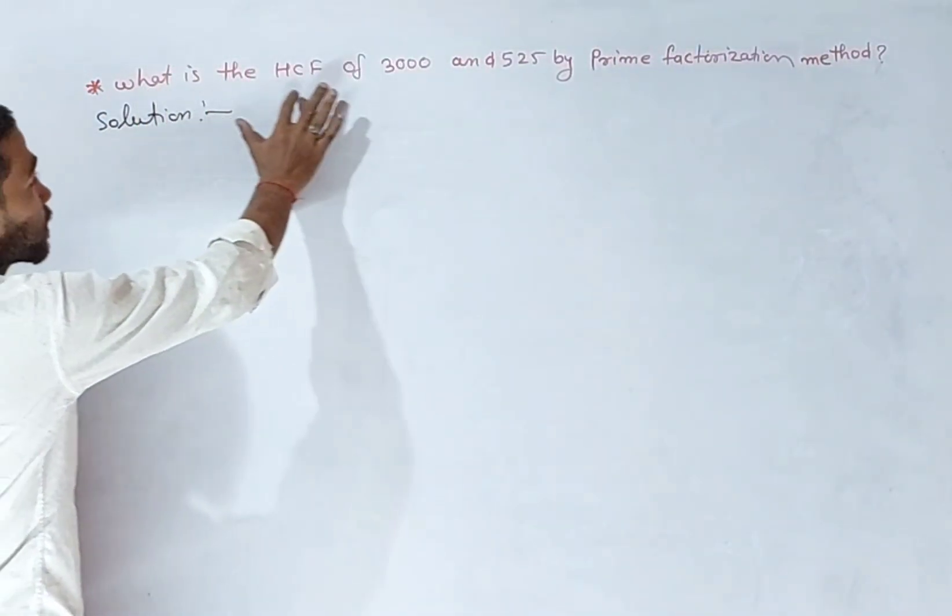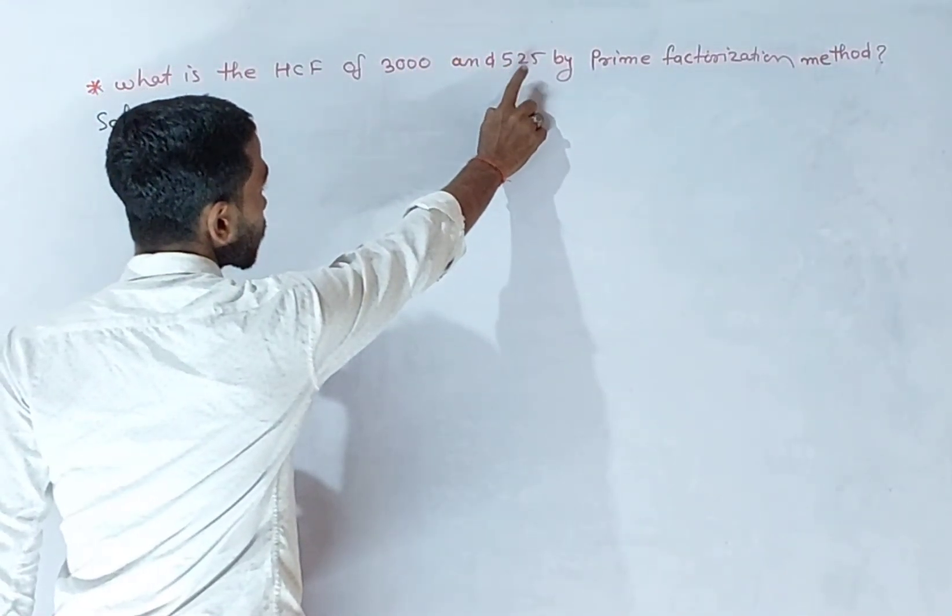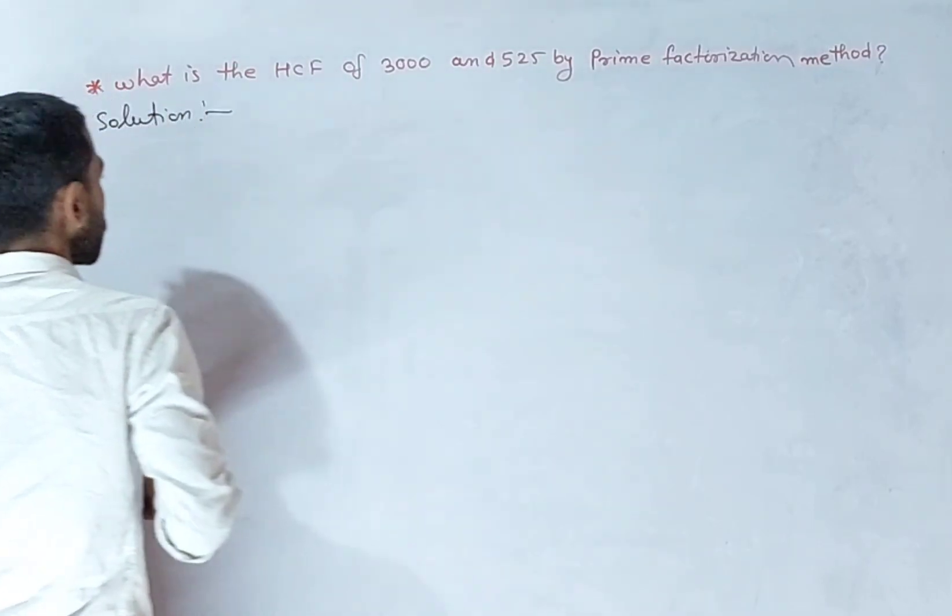Question is, what is the HCF of 3000 and 525 by prime factorization method?